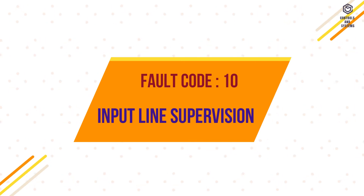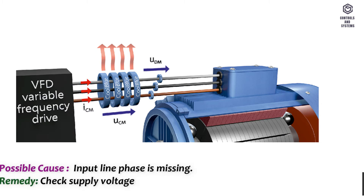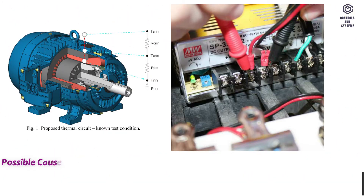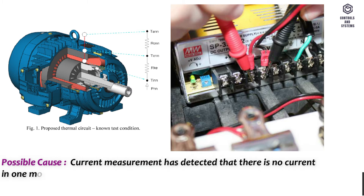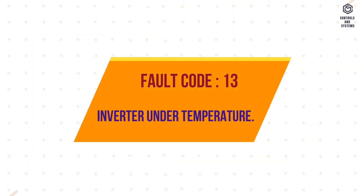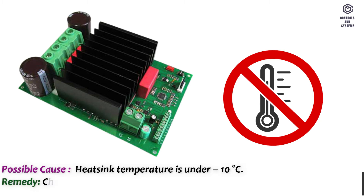Fault code 10 – Input line supervision. Possible cause: input line phase is missing. Remedy: check supply voltage and cable. Fault code 11 – Output phase supervision. Possible cause: current measurement has detected no current in one motor phase. Remedy: check motor cables and motor. Fault code 13 – Inverter under temperature. Possible cause: heat sink temperature is under minus 10 degrees Celsius. Remedy: check that the inverter is operated under specified conditions.